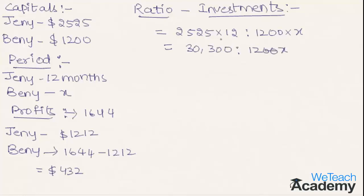We can cancel the two zeros and further simplify. Dividing both sides by 300, we get 101 is to 4X as the simplified investment ratio.